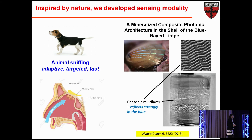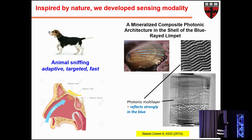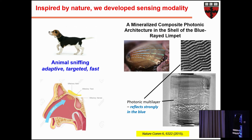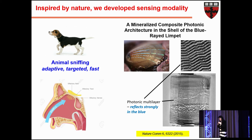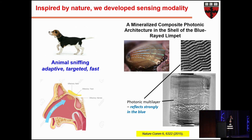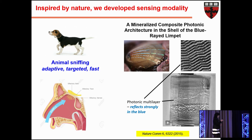I'd like to go back to structural color. The blue-ray limpet is another biological system we studied in our group. These blue rays on its surface are structural color — it's a calcium carbonate shell, but in this region it forms a photonic multilayer. The distance between these layers gives you strong reflection in the blue. You can see this color very well even though it's made of transparent calcium carbonate material. I will take some lessons from olfactory systems and take advantage of photonic multilayers.